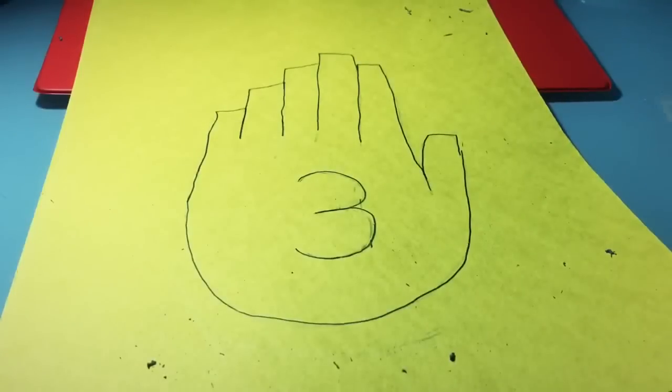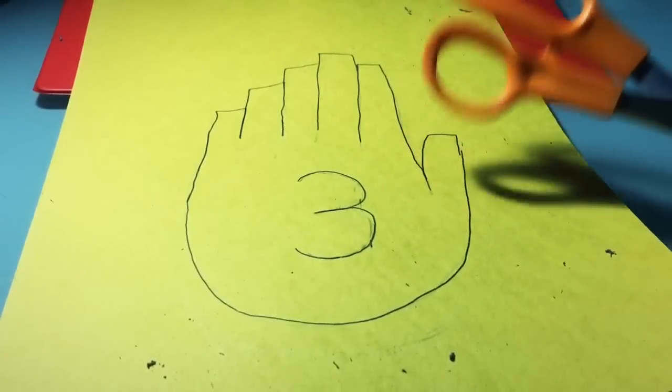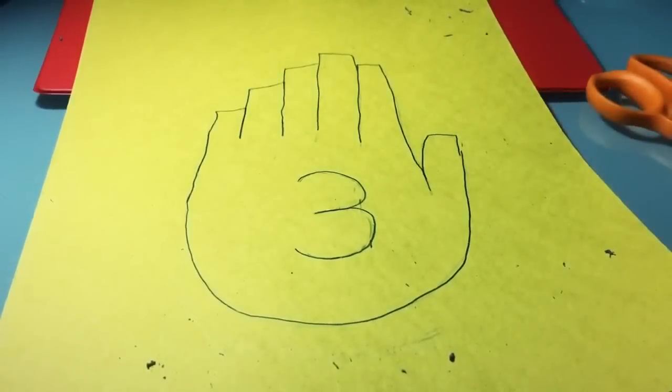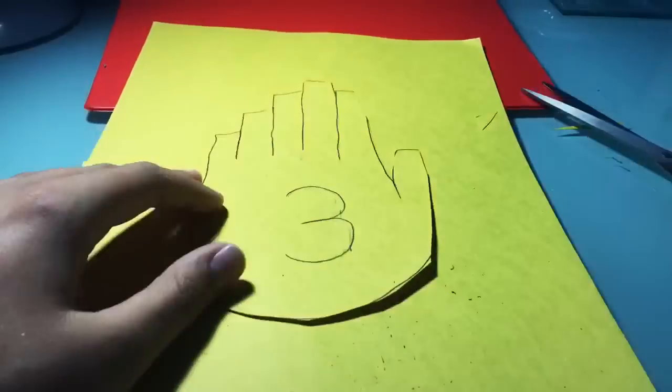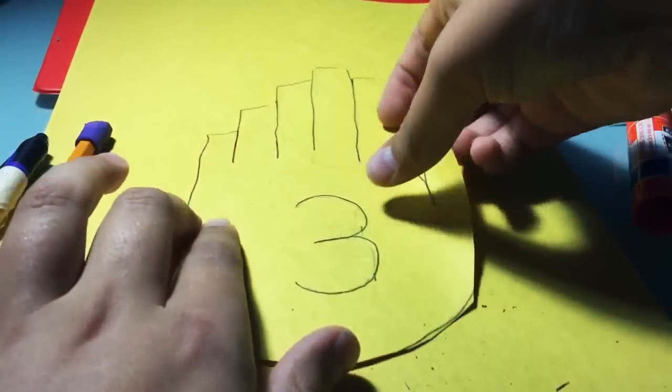Now you're left with your full six-fingered hand, and you're going to want to cut it out so you can put it on the journal.